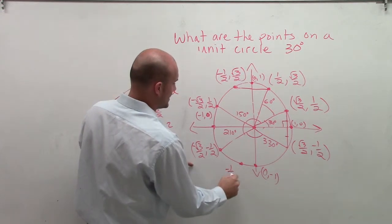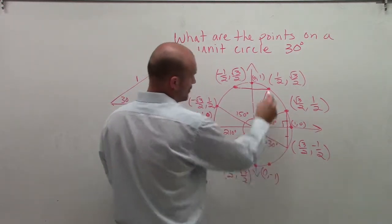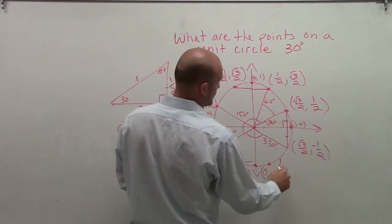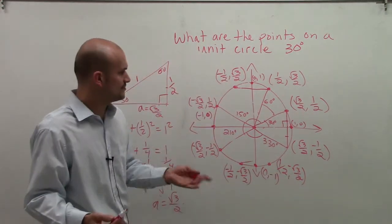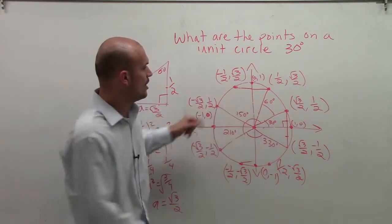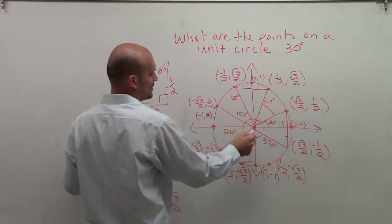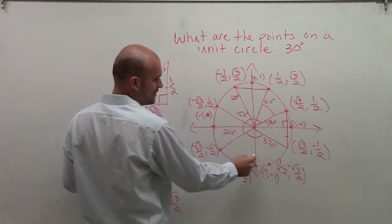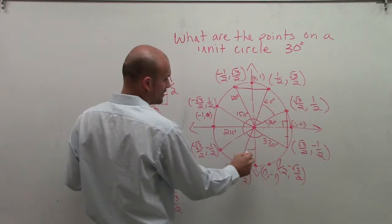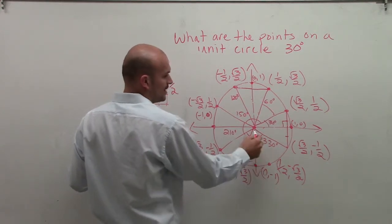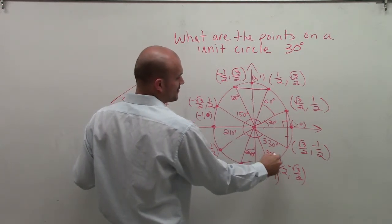So then this point would be negative 1 half, comma negative square root of 3 over 2. And then the reflection of that point over there would be 1 half, comma negative square root of 3 divided by 2. Now, what are the angles for these points? Well, again, if this is 90, to go off 30 degrees off of 90 would make this 120 degrees. Then to go, if all the way around here is 270, 30 degrees off of that would be 240 degrees. And then here, I have 270. To add another 30 degrees, I'm going to have a 300 degree triangle.